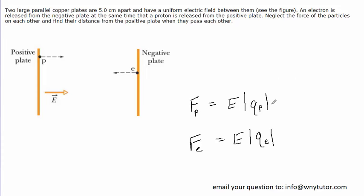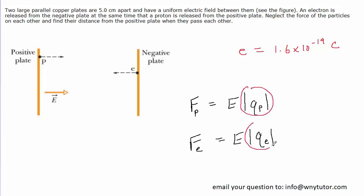Now, of course, for both a proton and an electron, the magnitude of charge is equal to the elementary charge e, which has a value of 1.6 times 10 to the negative 19th coulombs. So that's the magnitude of charge for both a proton and an electron, and we can replace the magnitude of each charge with e.